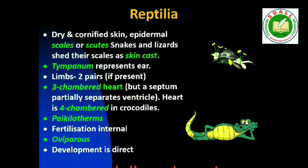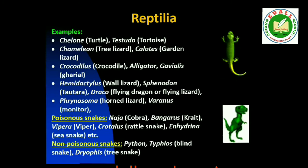Fifth is Class Reptilia. The class name refers to their creeping or crawling mode of locomotion — Latin repere or reptum, to creep or crawl. They are mostly terrestrial animals and their body is covered by dry and cornified skin, epidermal scales or scutes. They do not have external ear openings. Tympanum represents the ear. Limbs, when present, are two pairs. Heart is usually three-chambered, but four-chambered in crocodiles. Reptiles are poikilotherms. Snakes and lizards shed their scales as skin cast. Sexes are separate. Fertilization is internal. They are oviparous and development is direct. Examples: Chelone (turtle), Testudo (tortoise), Chameleon (tree lizard), Calotes (garden lizard), Crocodilus (crocodile), Alligator, Hemidactylus (wall lizard). Poisonous snakes: Naja (cobra), Bangarus (krait), Vipera (viper).